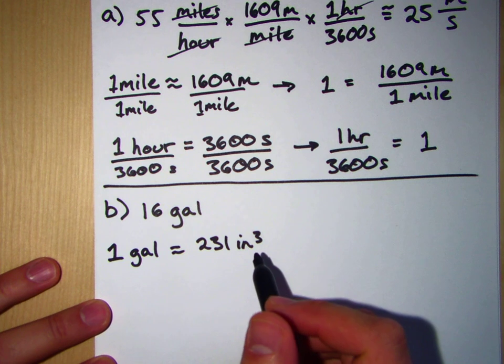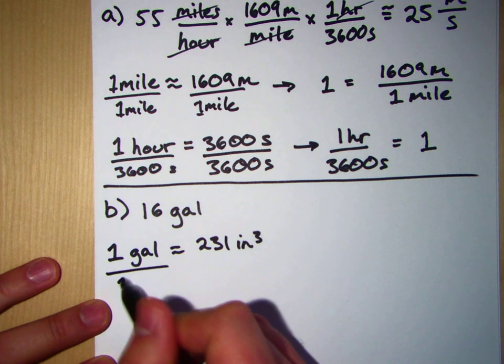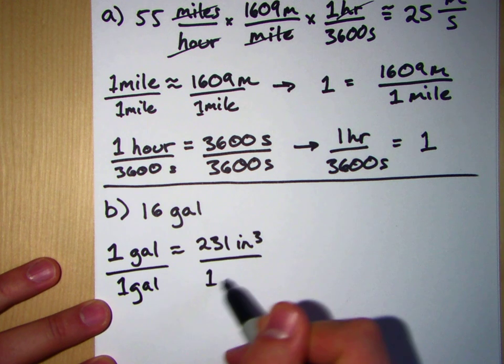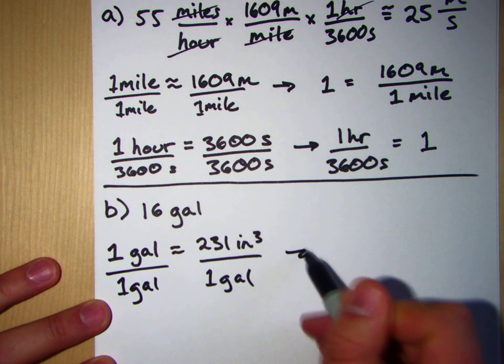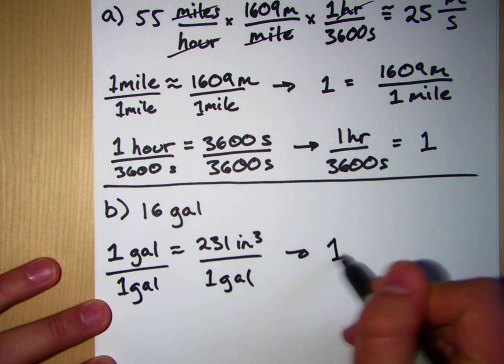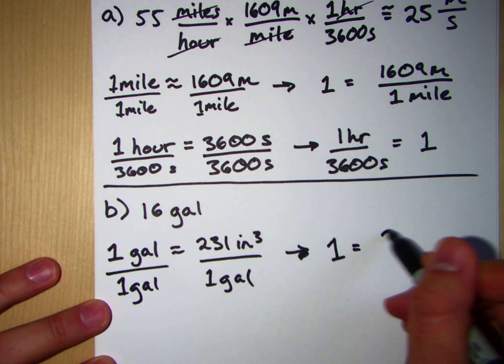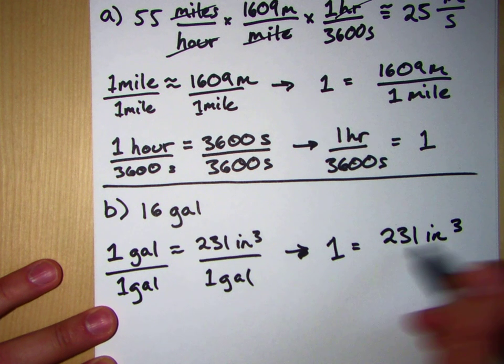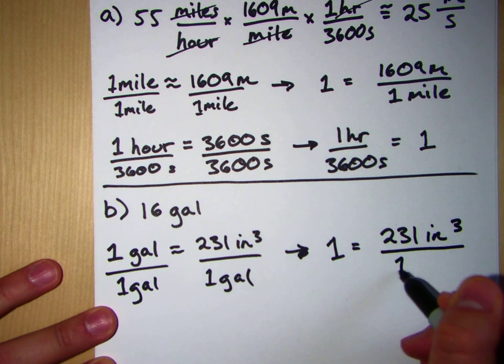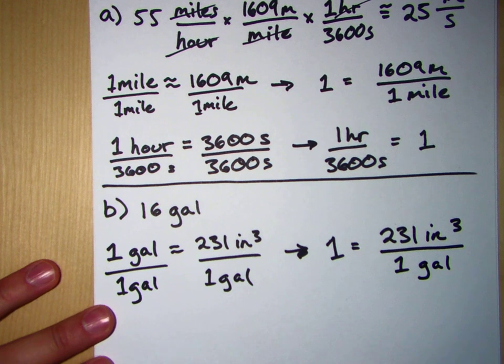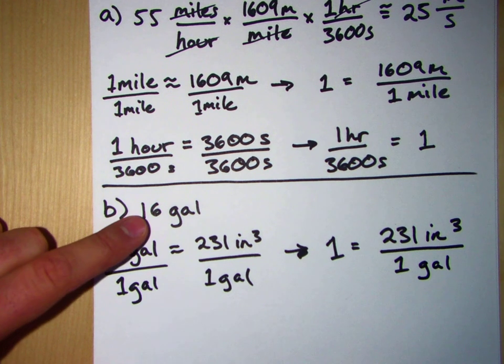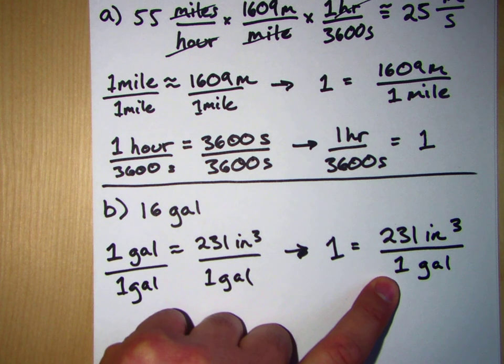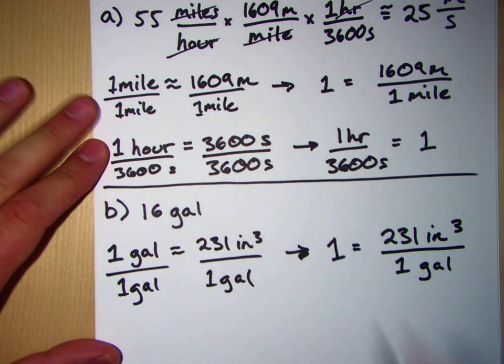If we divide by, in this case, divide by one gallon, then what we have is one is equal to 231 inches cubed divided by one gallon. And so the first thing we're going to do is we're going to multiply this 16 gallons by this one right here, 231 inches cubed divided by one gallon.